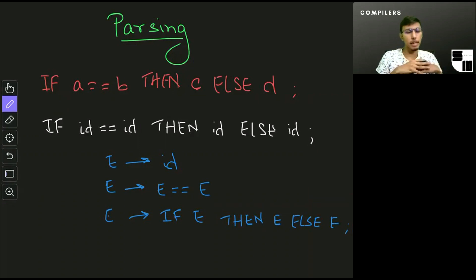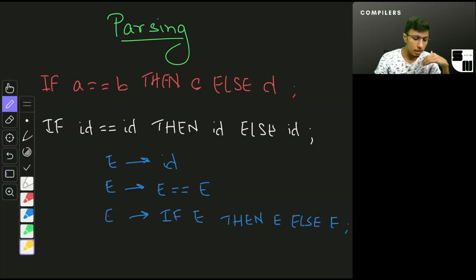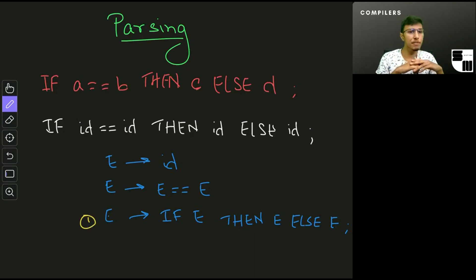The way I would do that is, first off to start with an expression, I would use the third rule. I would get something like IF expression THEN expression ELSE expression. Then I would change the first expression in that using the second rule right here, and I would have something like IF E equal equals E THEN E ELSE E.